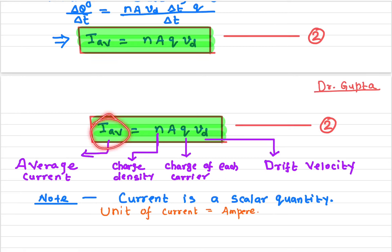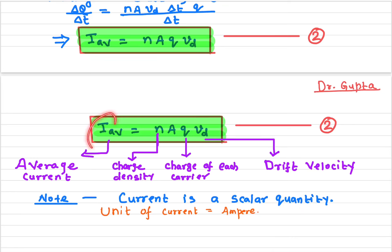Current is a scalar quantity — it does not have a direction in the vector sense. Although we say current has a direction, two currents cannot be added vectorially. If a current is passing one way and another current is passing another way, the resultant does not simply add as vectors. So current is a scalar quantity, and the unit of current is the ampere. This is the equation relating drift velocity and average current.